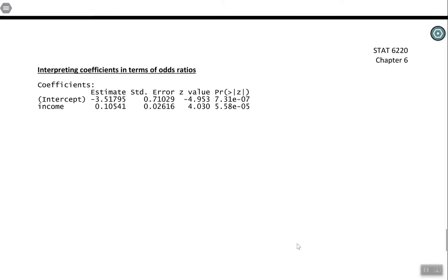In this video, we're going to be interpreting the coefficients for logistic regression in terms of odds and odds ratios. So we have the R output here, and I think it helps to remember how our equation was set up.